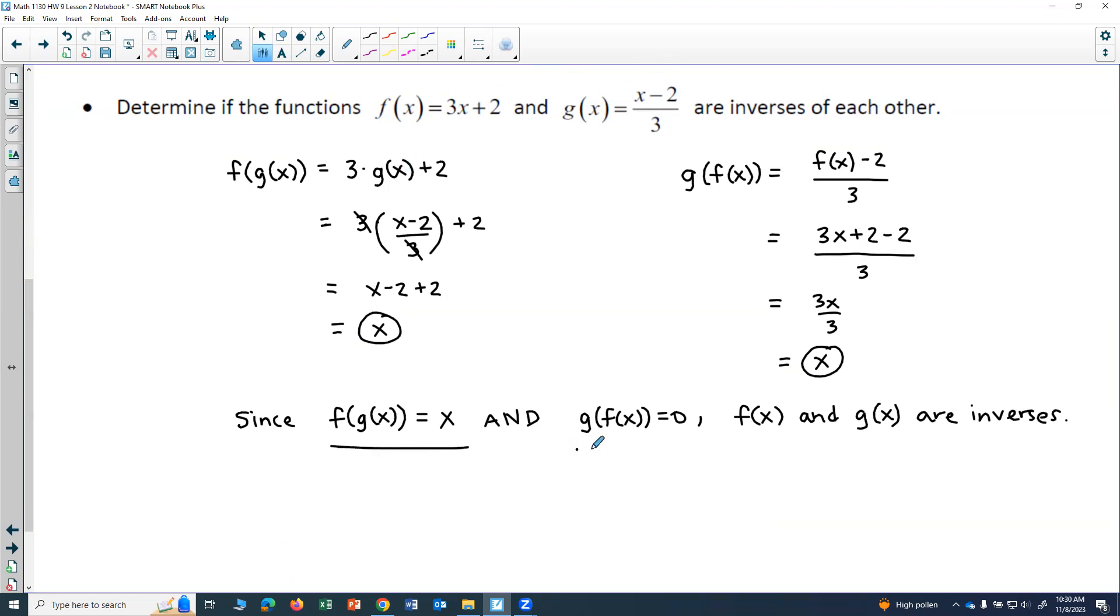But this is how you check whether or not two functions are inverses. And I wrote that wrong, I see now this should not say zero, this should say x. f of g of x equals x and g of f of x equals x. So that's really important. They both have to equal x in order for the two functions to be inverses.